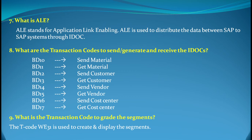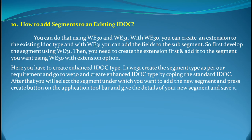The ninth question is: what is the T-code to create a segment? WE31 is the T-code. We've already seen this in a different context, but specifically WE31 is used to create and display a segment — so it's a multi-purpose transaction code for creating and displaying segments.